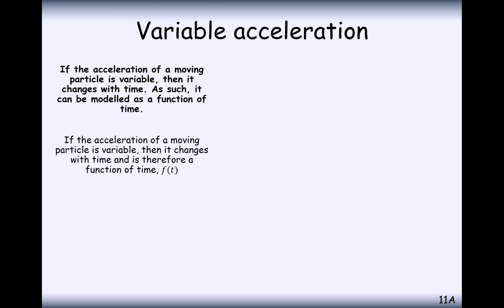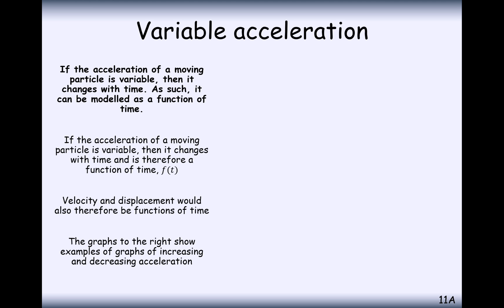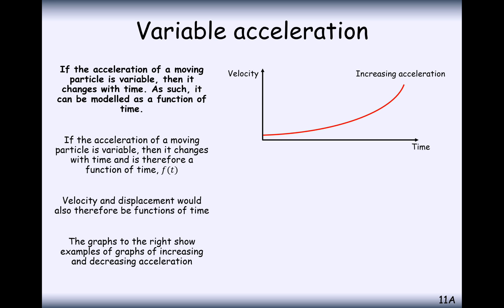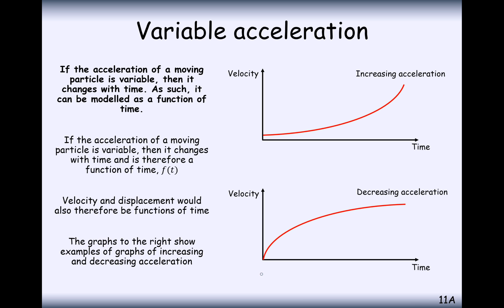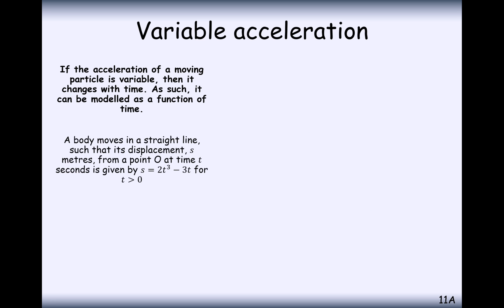So in general you can't use your SUVAT formulas in this chapter. We're going to look at a different set of rules that links displacement, velocity and acceleration. If the acceleration of a moving particle is variable, it changes with respect to time, so we'll have a function of time. We can have curvy velocity-time graphs now. For example, a particle might start accelerating slowly and then accelerate more quickly, or start quickly and then reach a more constant velocity.